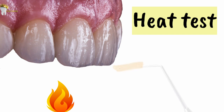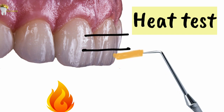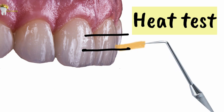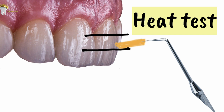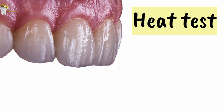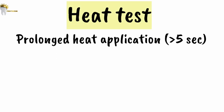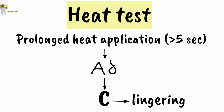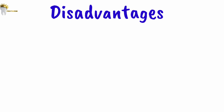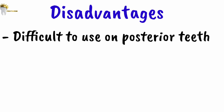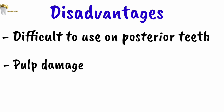The gutta-percha is applied to the occlusal buccal third of the exposed crown. If there is no response, it is then applied to the central portion or closer to the cervical margin. When the patient responds, the gutta-percha should be removed immediately. Heat application should not be prolonged, as this stimulates A-delta fibers initially and then C fibers, causing lingering pain. Heat tests should be applied for no longer than five seconds. A disadvantage of gutta-percha is difficulty of use on posterior teeth and risk of pulp damage from excessive heating.